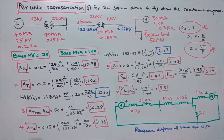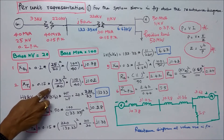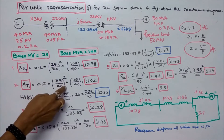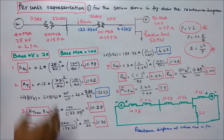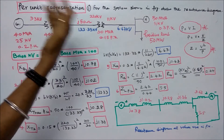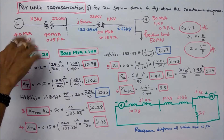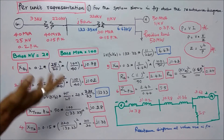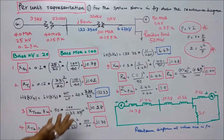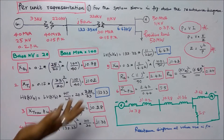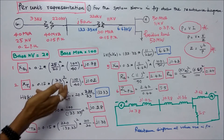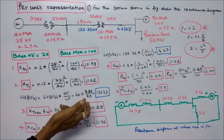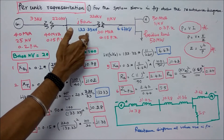Second is the transformer. Given value 0.15 multiplied by (33/20)² × (100/40) equals j1.02. On the transformer secondary side, we need to find the high-voltage kV base. The primary is 33 kV and secondary is 220 kV. Given base is 20 kV, so high-voltage kV base = low-voltage kV base × (HT/LT) = 20 × (220/33) = 133.33 kV.